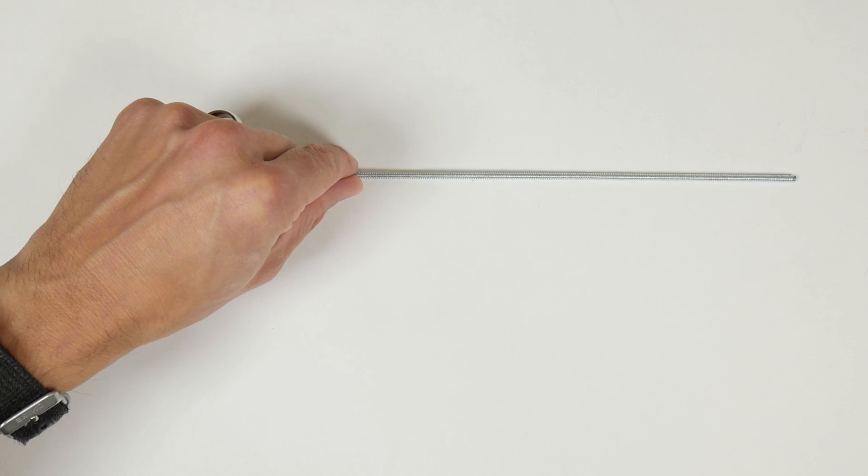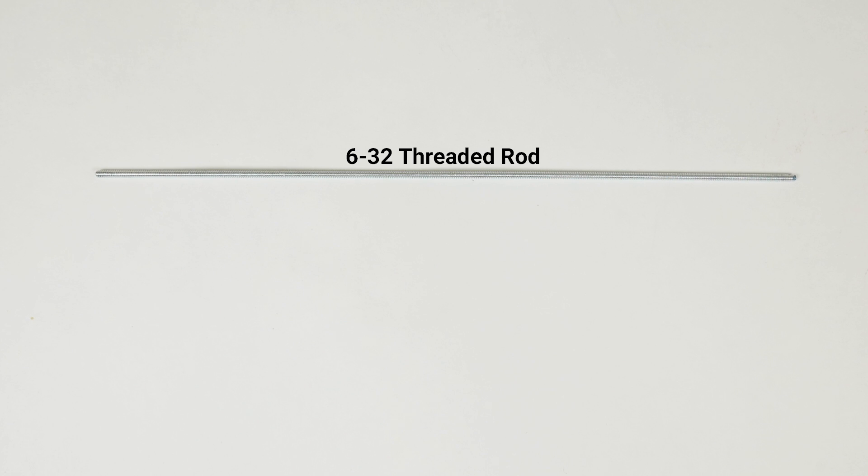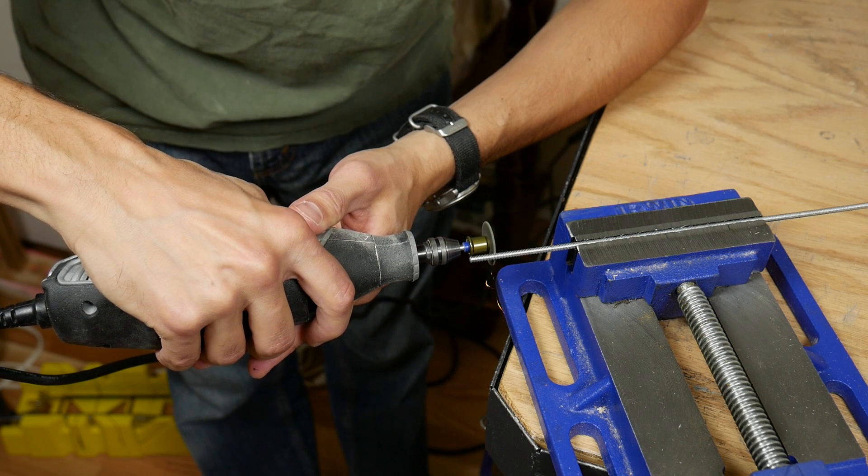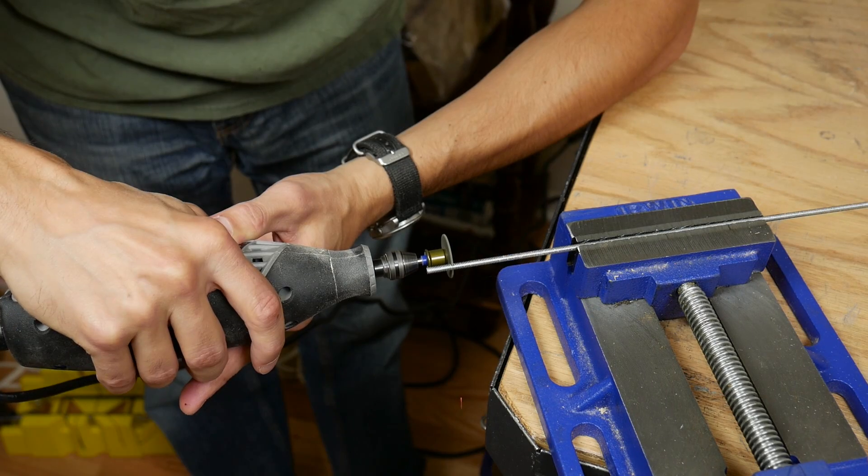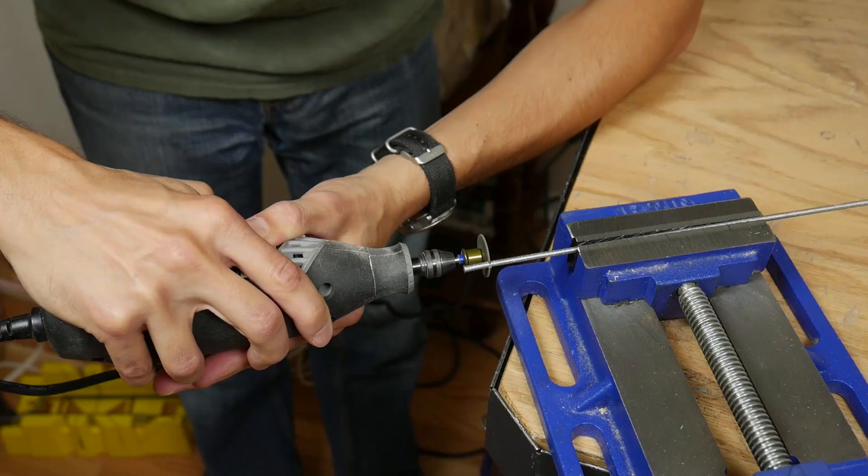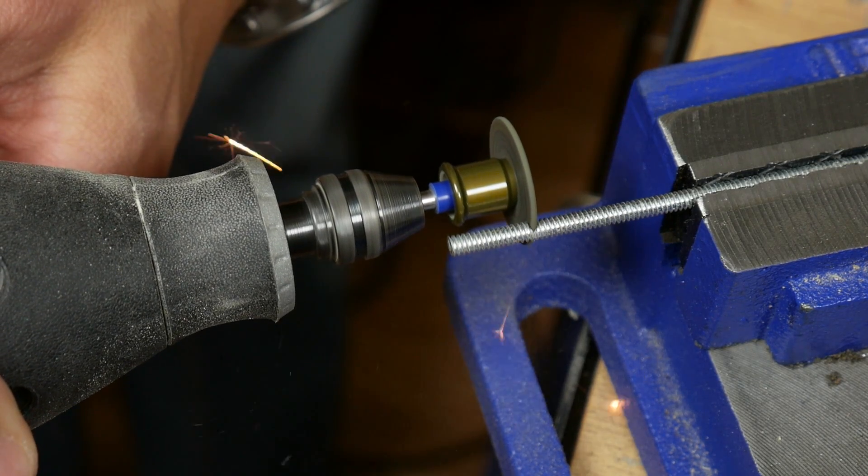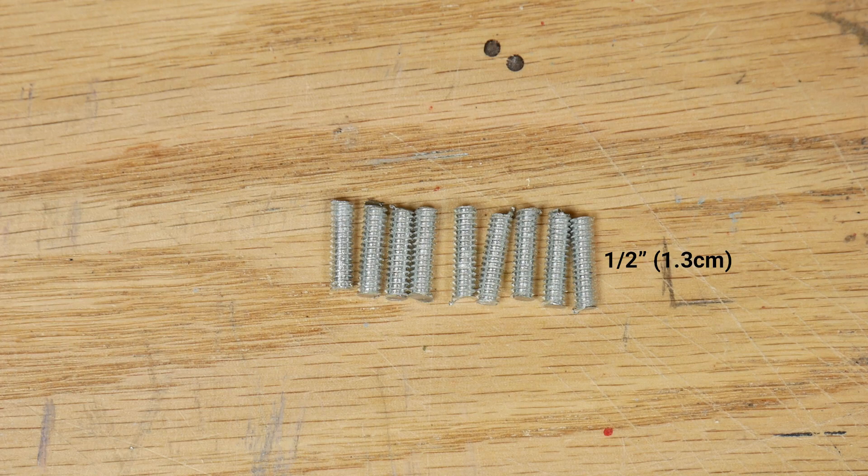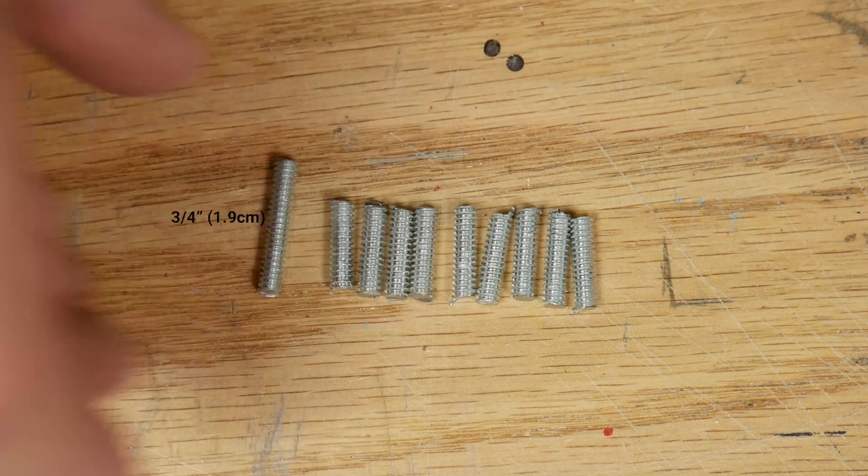To connect all these pieces I got some 6-32 threaded rod and some nylon insert lock nuts. I cut the threaded rod into 10 pieces with a cutting wheel. Nine were cut to a length of a half inch and one was cut to three quarters of an inch.